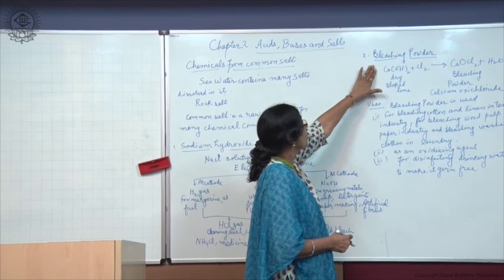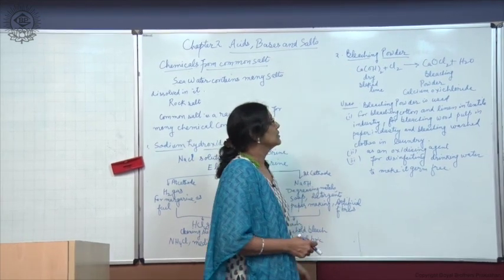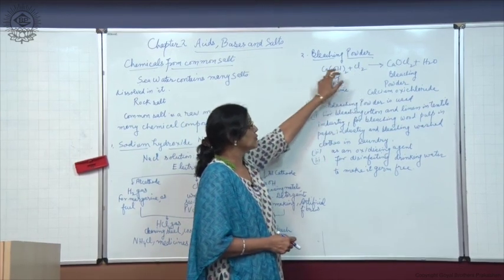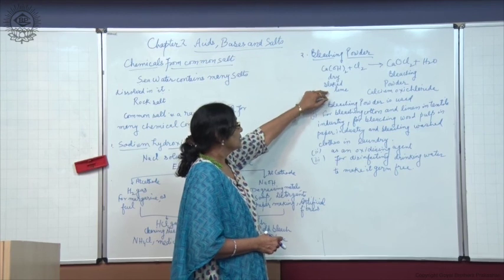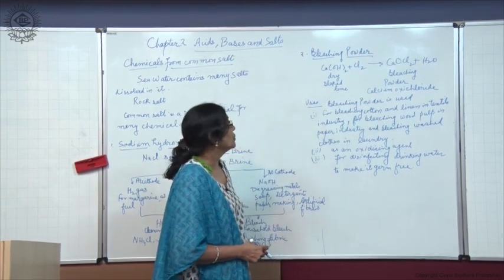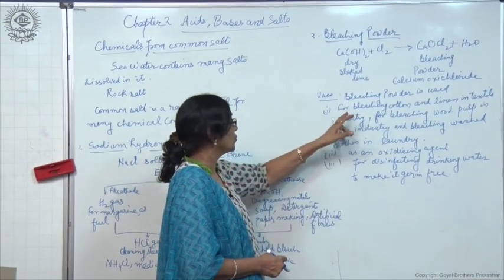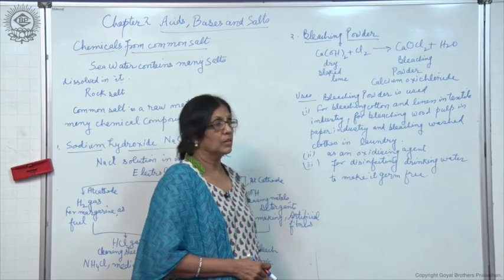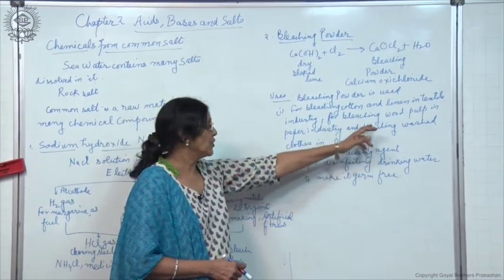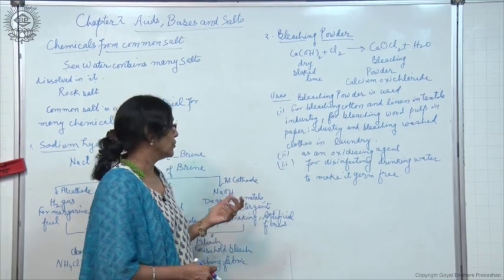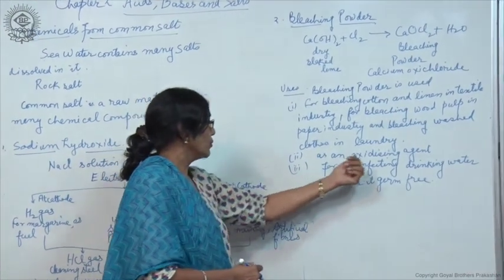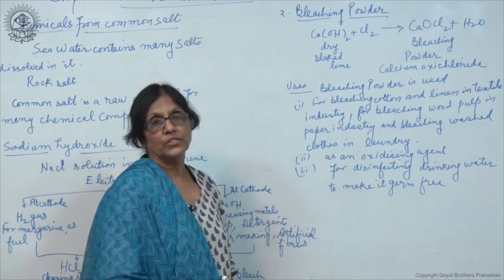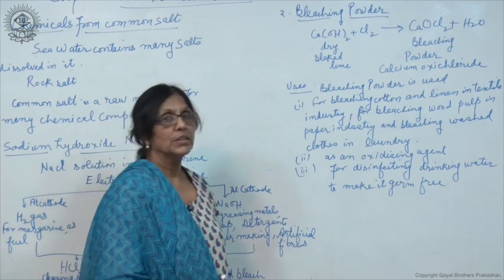Another important compound is bleaching powder. Its formula is CaOCl2, also called calcium oxychloride. It is formed by passing chlorine gas over dry slaked lime, forming CaOCl2 and water. Bleaching powder is widely used for bleaching cotton and linen in textile industry, in paper industry for bleaching wood pulp, and in laundry for bleaching washed clothes. It is also used as an oxidizing agent and to disinfect drinking water to make it germ-free and fit for drinking purposes.